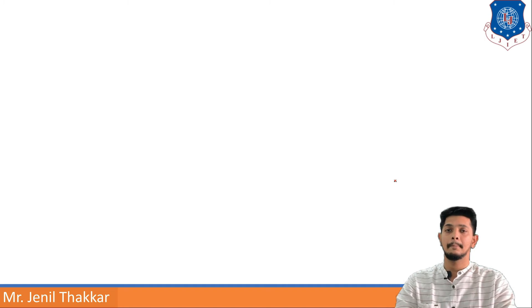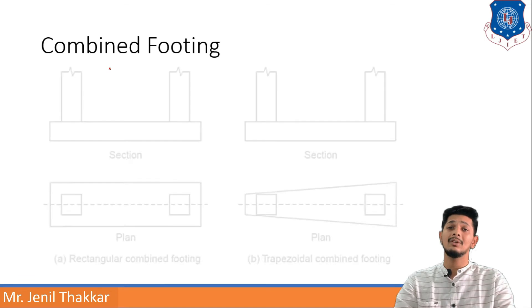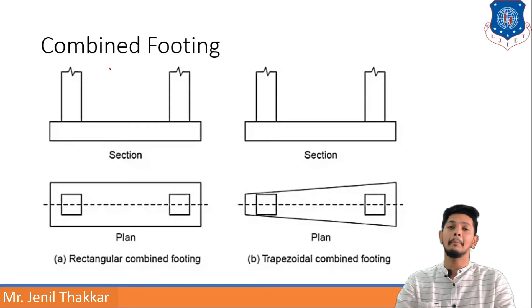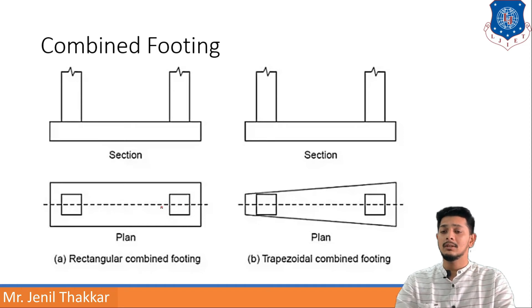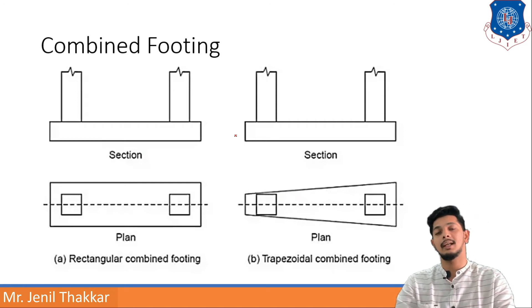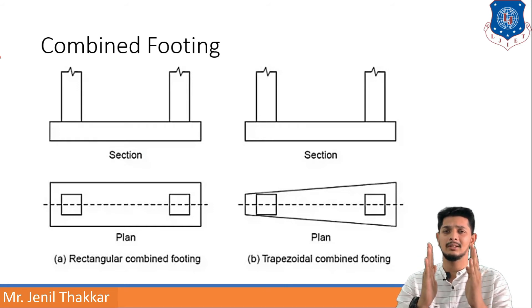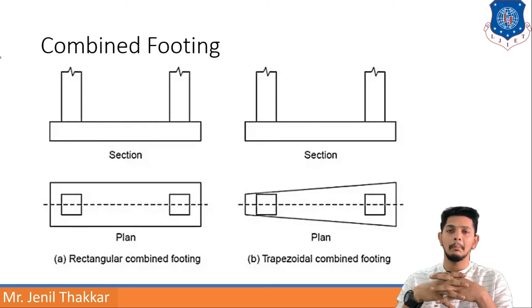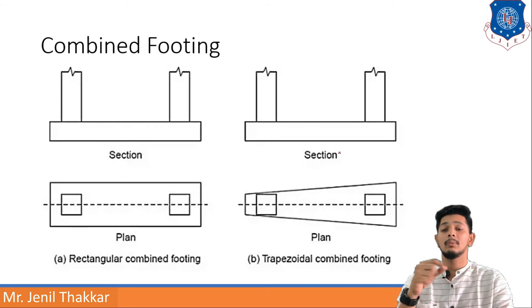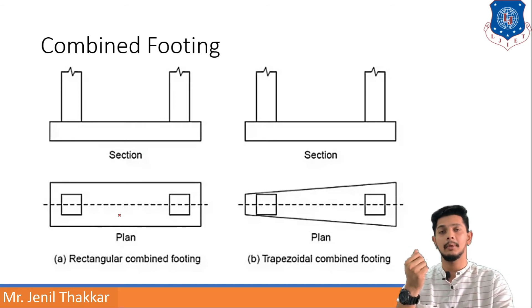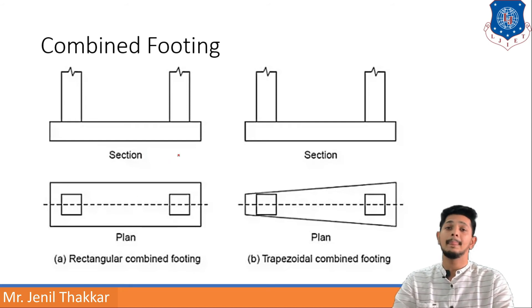Combined footings are of two types: rectangular combined footings and trapezoidal combined footings. In the plan view, one appears rectangular and the other trapezoidal. Combined footings are used when two columns are at very close distances or are individually weaker. If two columns are joined with a rectangular base, it is a rectangular combined footing. If one column is weaker than the other, a trapezoidal combined footing is used.